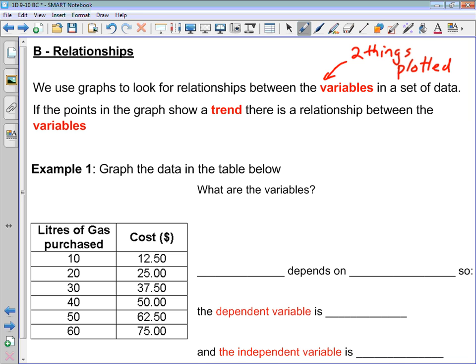If the points that we see in our graph show a trend or a pattern, then there is some relationship between the variables. And if our graph doesn't show a trend or we don't see a pattern in the points that we plot, then we can say that there's no relationship between our two variables. This is all a little bit more clear if we look at a specific example.